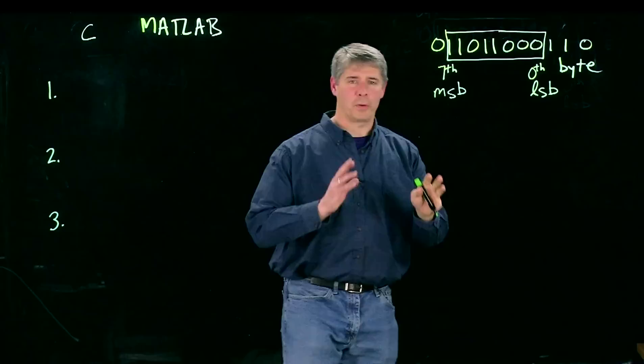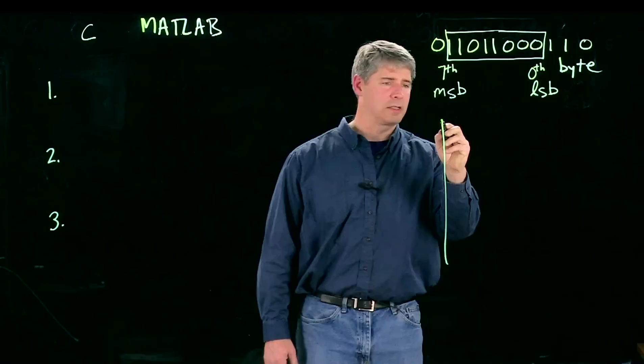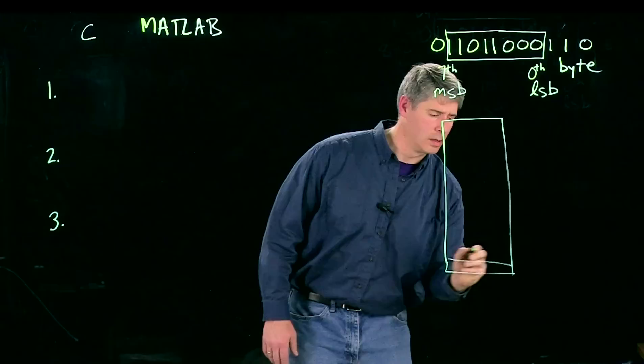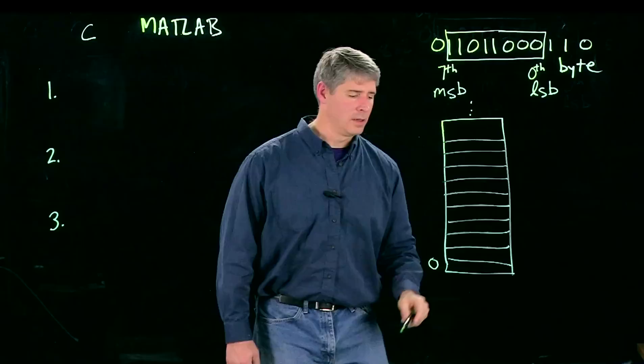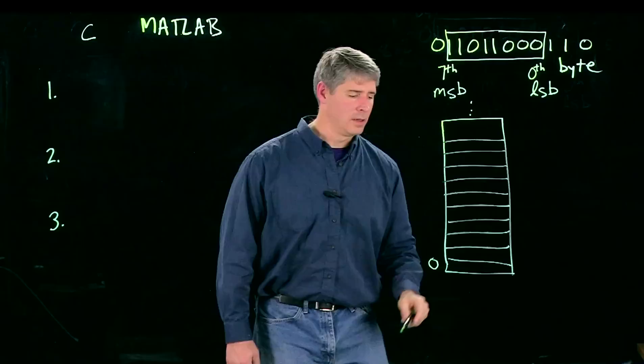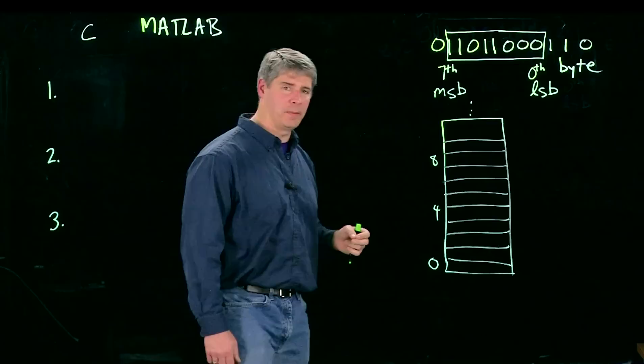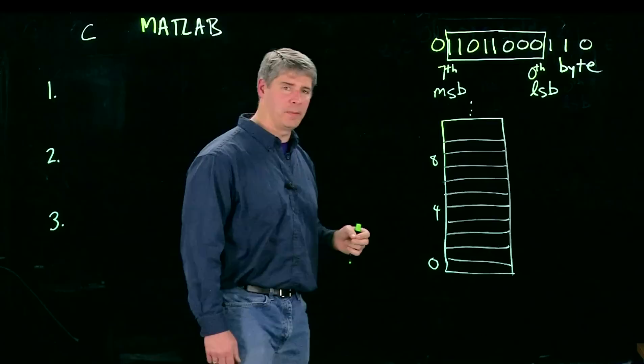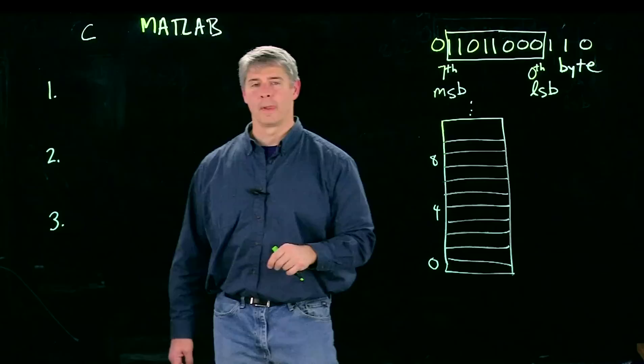So now if we want to represent all eight gigabytes of your RAM, for example, we can draw that as a vertical stack of bytes. We're going to call this the zeroth byte, one, two, three, fourth, five, six, seven, eight, et cetera. And these numbers are also called the address of the byte. So the address of this byte is zero. The address of this byte is four. We don't talk about addresses of bits. Bytes are the smallest addressable unit.